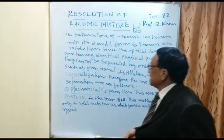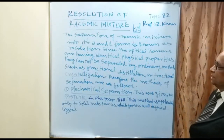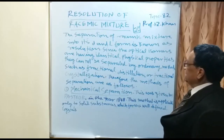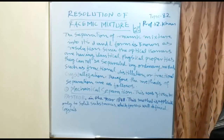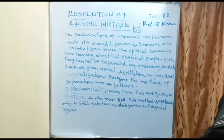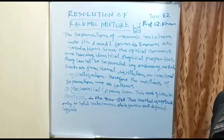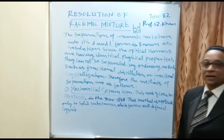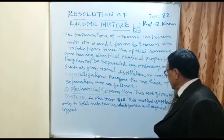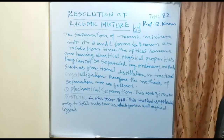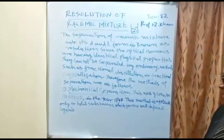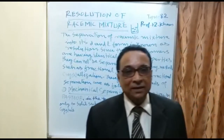The separation of a racemic mixture into its D and L form is known as resolution. Since the optical isomers have identical physical properties, they cannot be separated by ordinary methods such as fractional distillation or fractional crystallization. This mechanical method was given by Pasteur in 1848 and is applicable only to solid substances which form well-defined crystals.